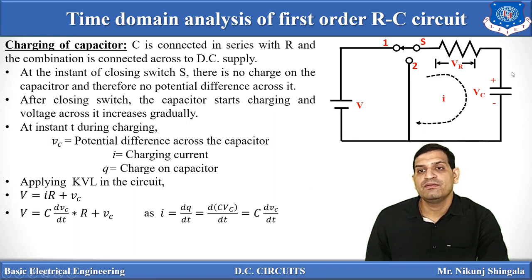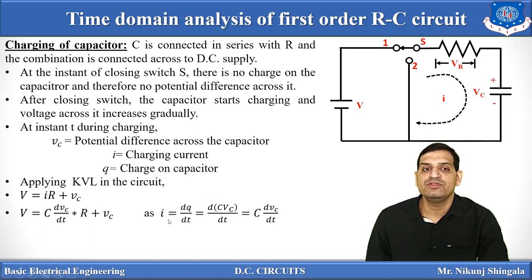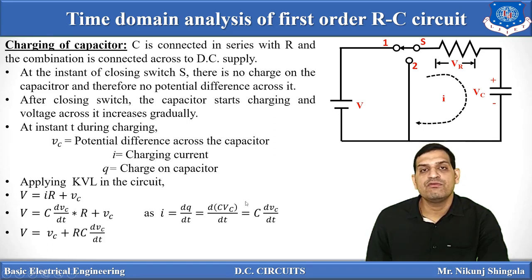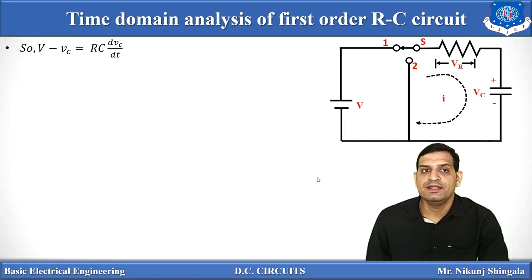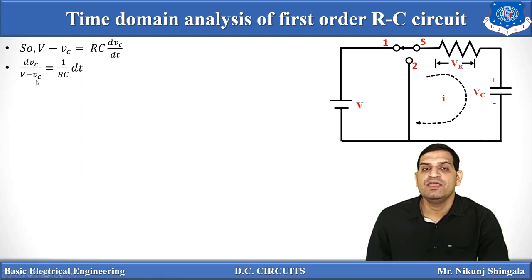Since I equals dQ/dt and Q equals CVC, we can write I equals C·dVC/dt. Substituting this into the equation, we get V equals RC·dVC/dt plus VC, which gives V minus VC equals RC·dVC/dt. Now using the variable separable method, we can write dVC divided by (V minus VC) equals (1/RC)·dt. On the left side we have terms in VC, on the right side terms in time t.